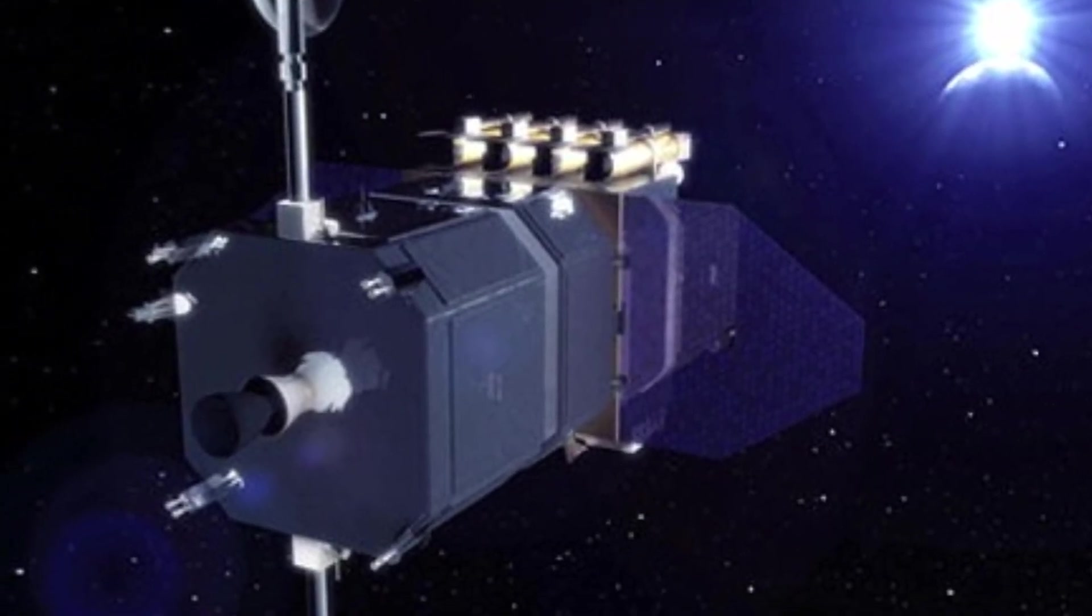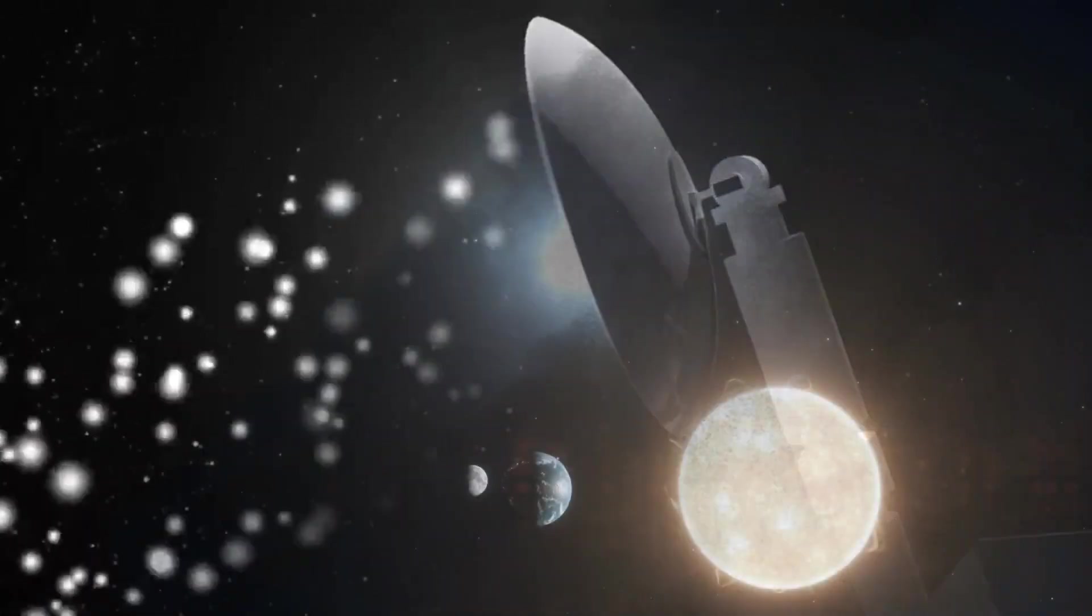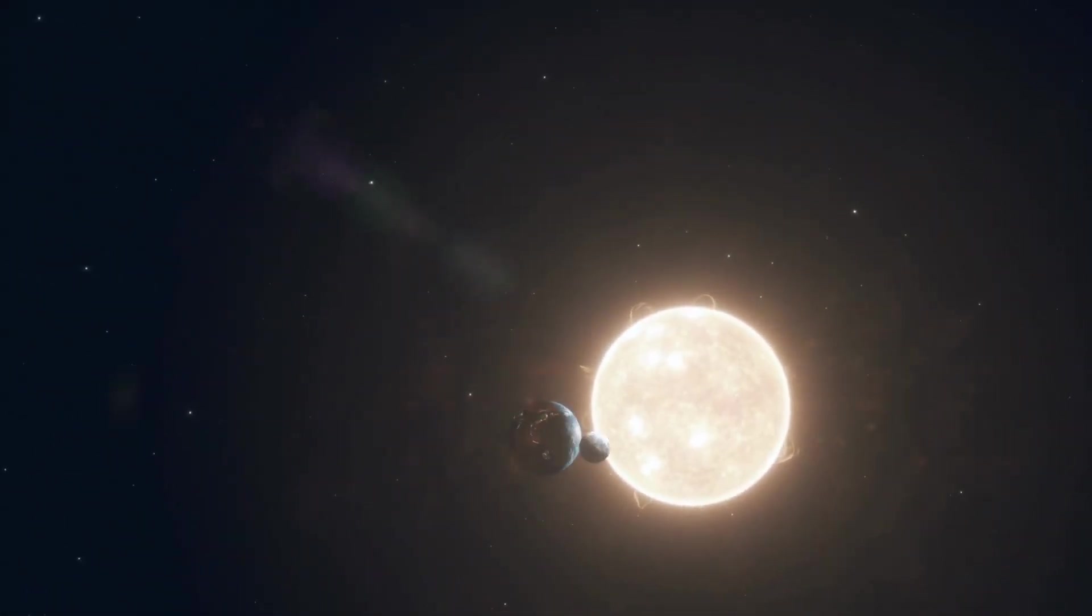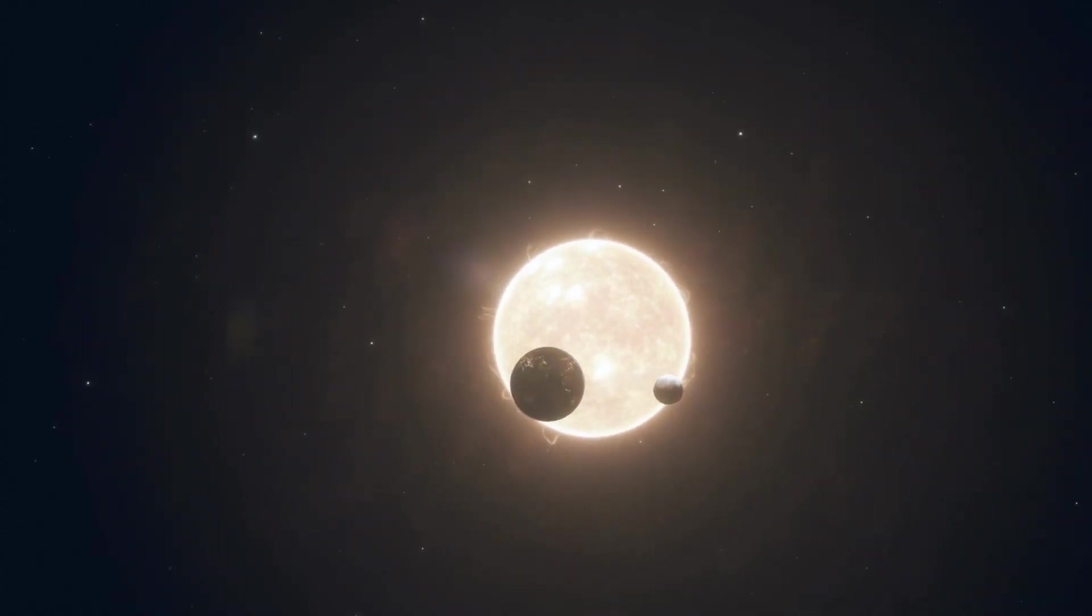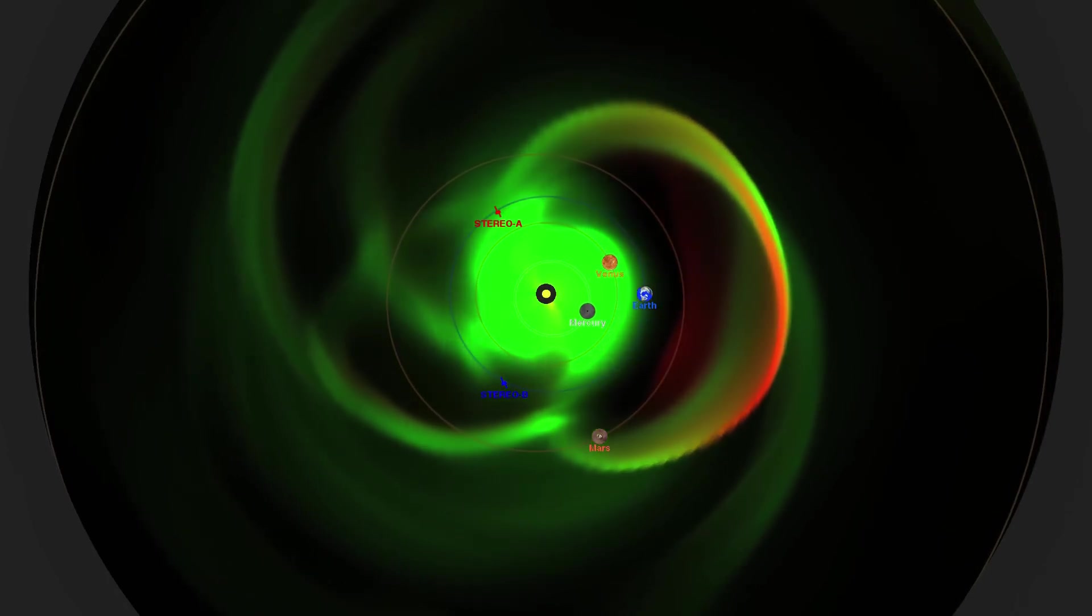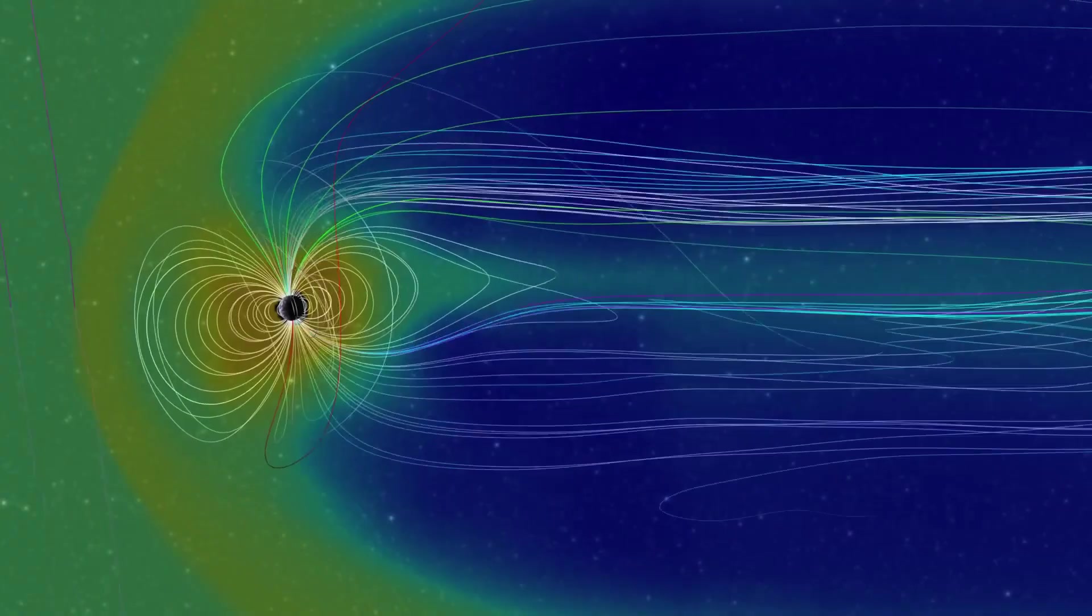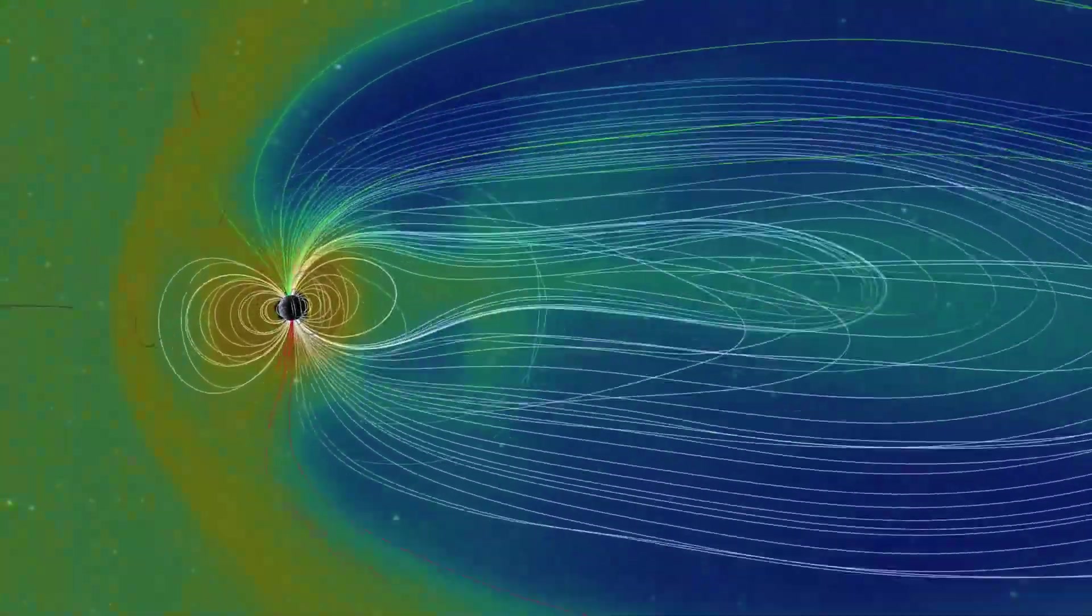Adding to the concerns, recent data from NASA's Solar Dynamics Observatory, equipped with advanced instruments to monitor the Sun, suggests that Earth might be directly in the path of a sunspot. This positioning raises the risk of powerful solar flares being directed our way, which could cause significant disruptions.